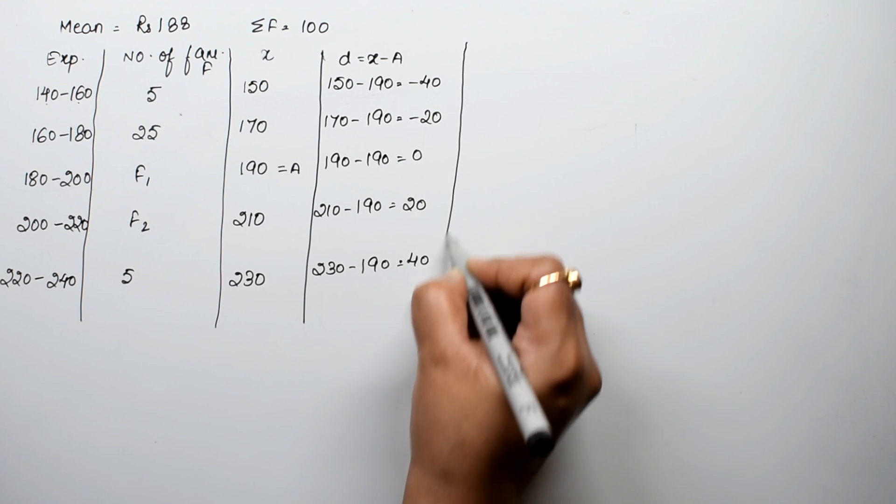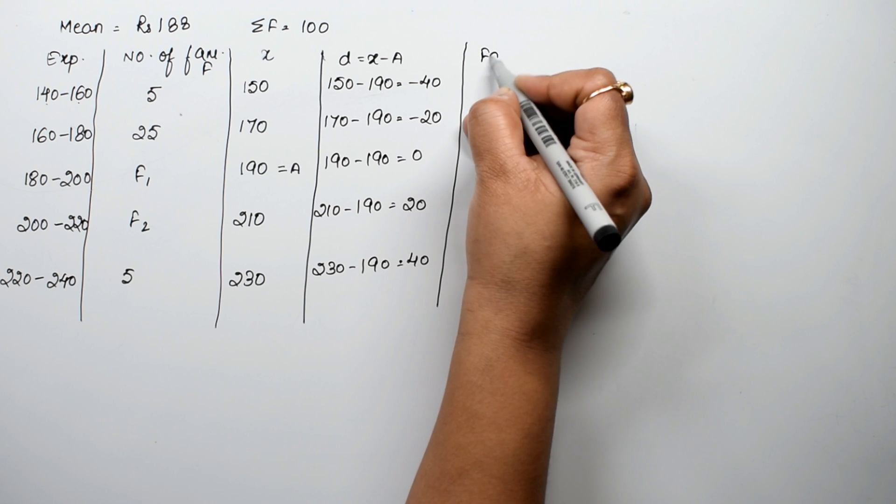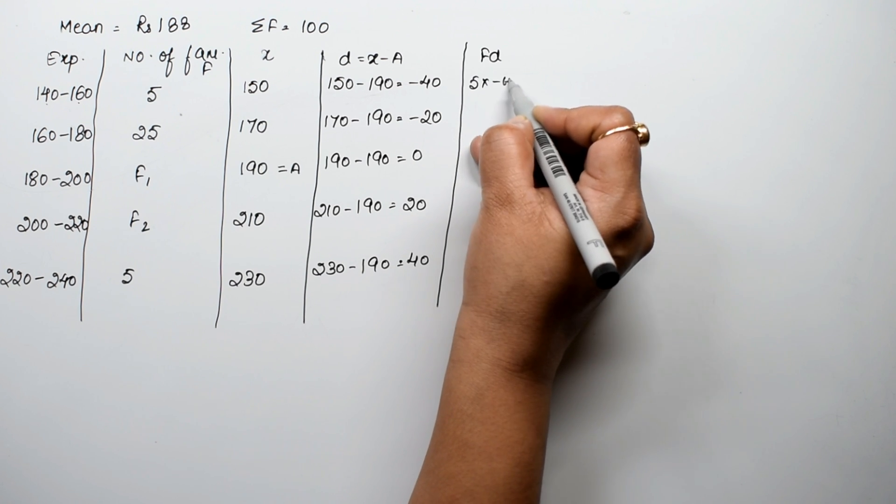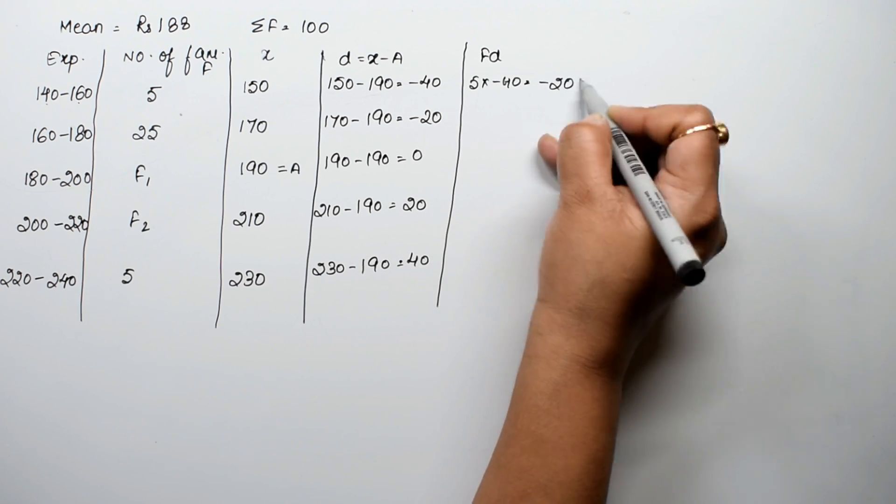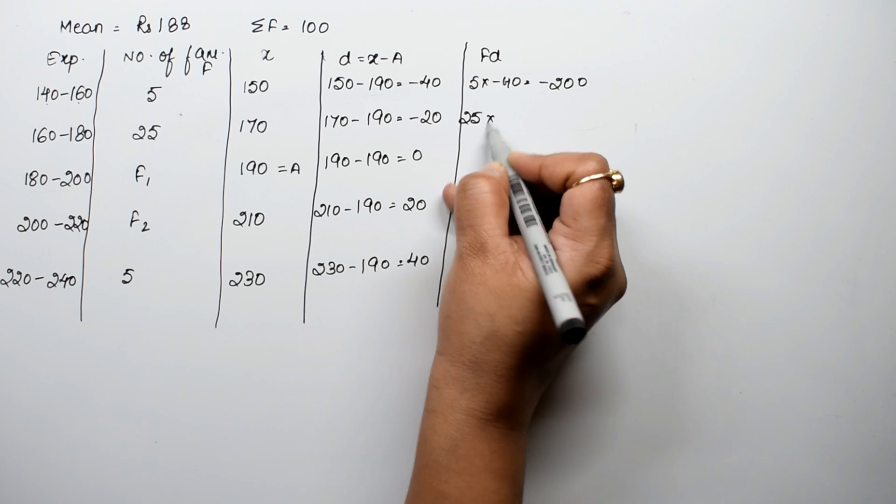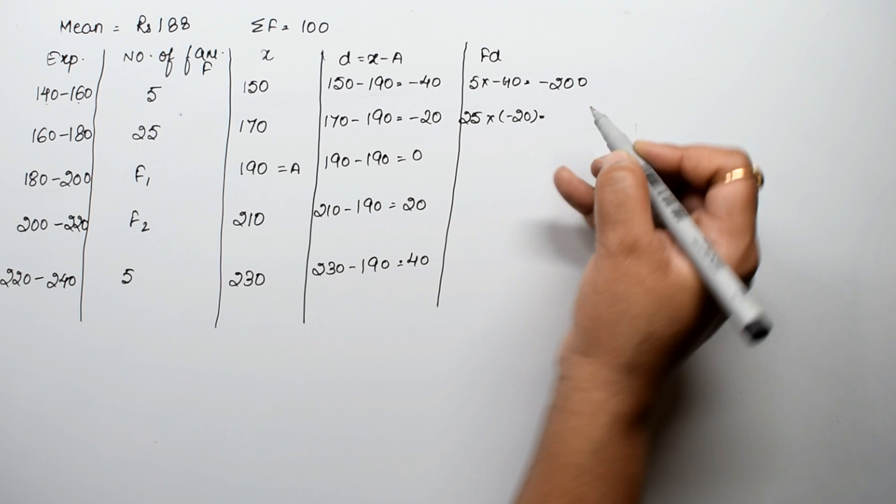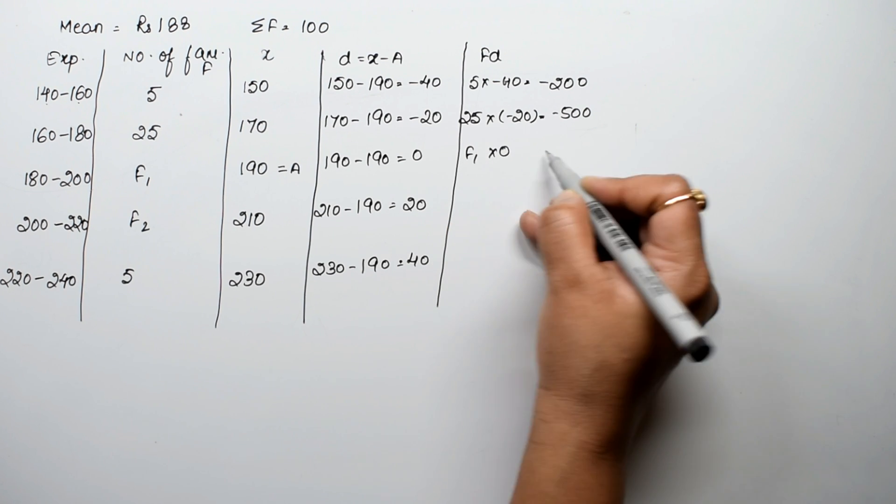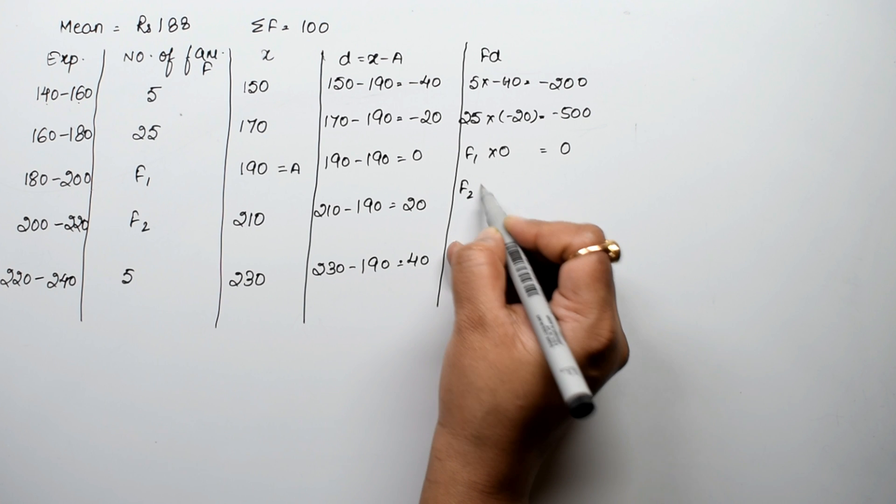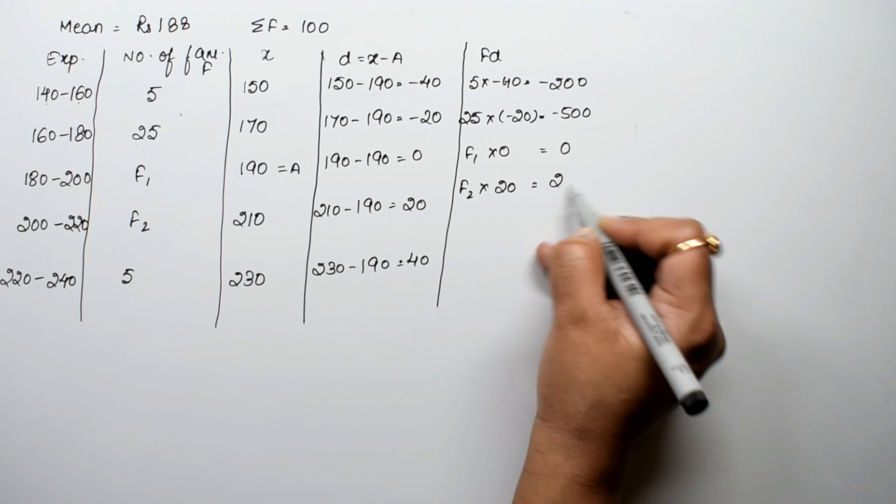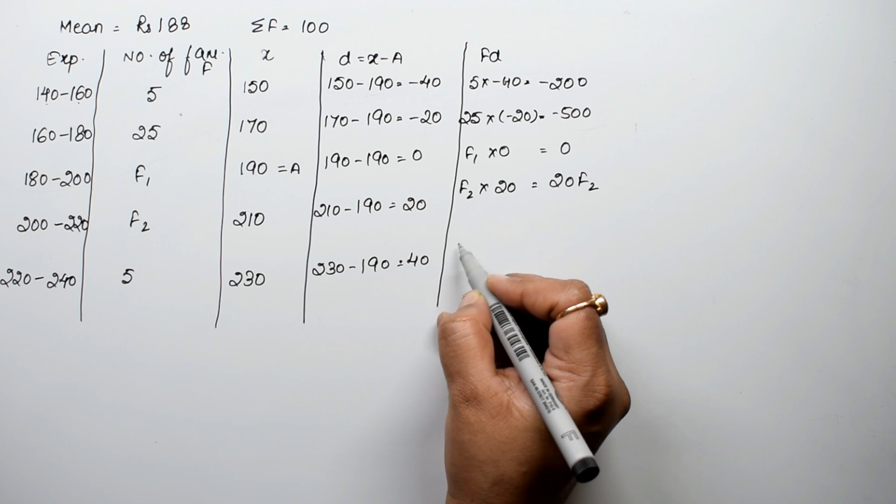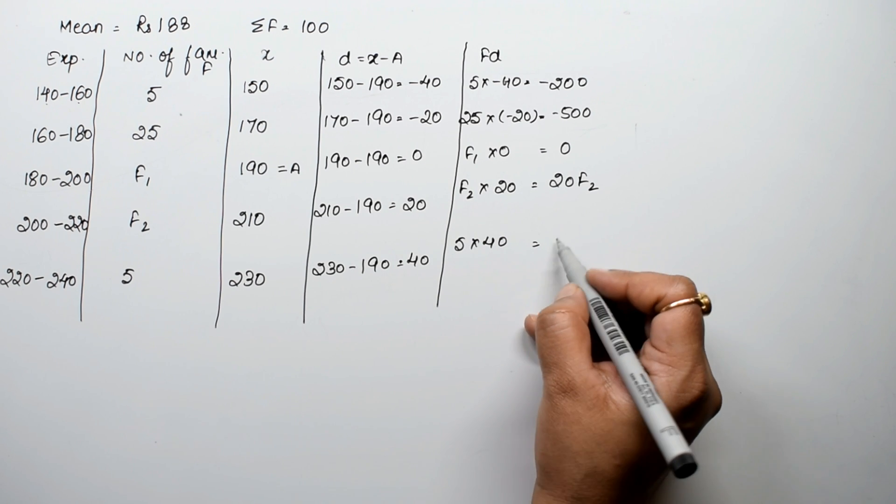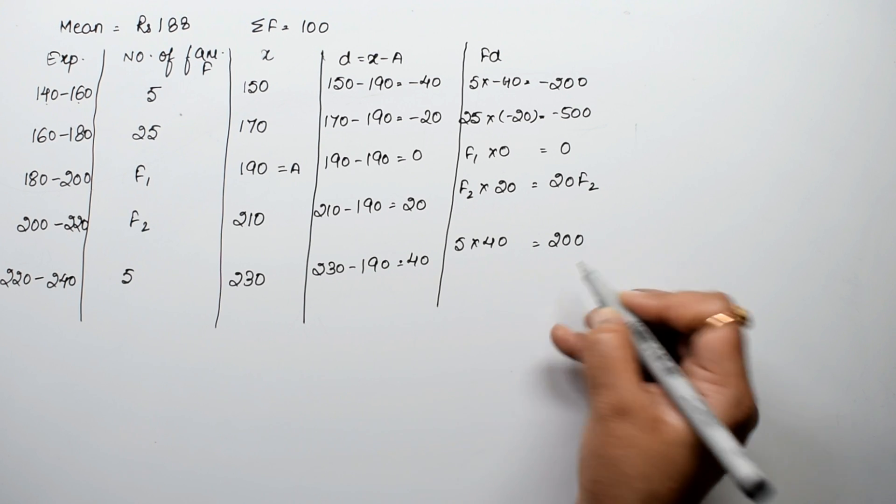Now we calculate fd. 5 into minus 40 equals minus 200. 25 into minus 20 equals minus 500. F1 into 0 equals 0. F2 into 20 equals 20F2. And 5 into 40 equals 200.